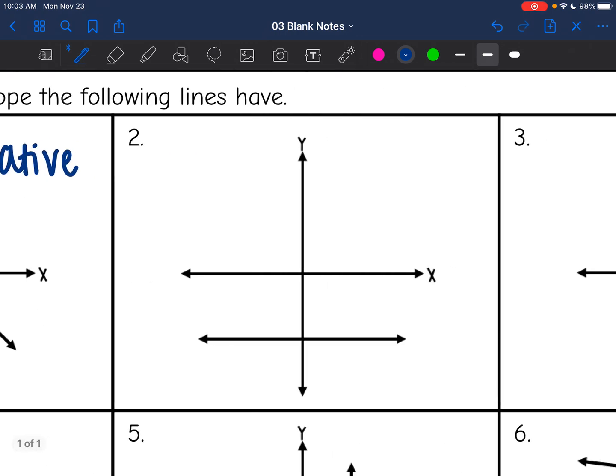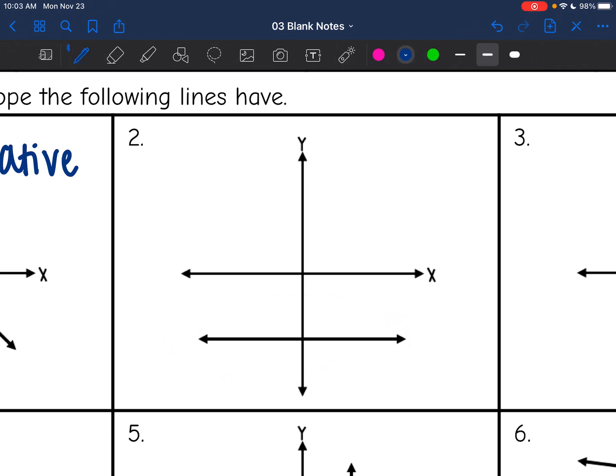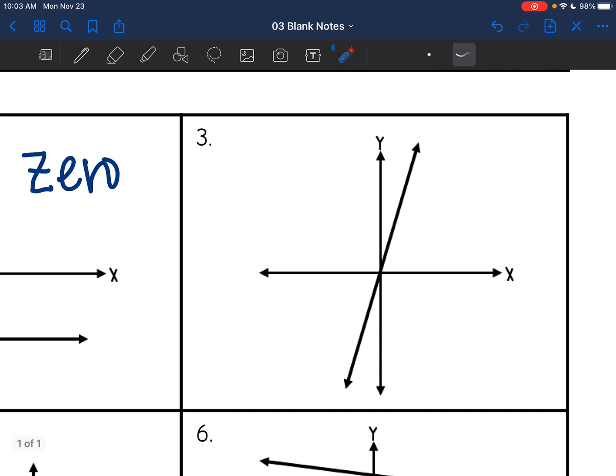Okay, next one we have a completely horizontal line with zero incline. So this would be a zero slope. Next one we have a line that is going up from left to right. So this would be a positive slope.